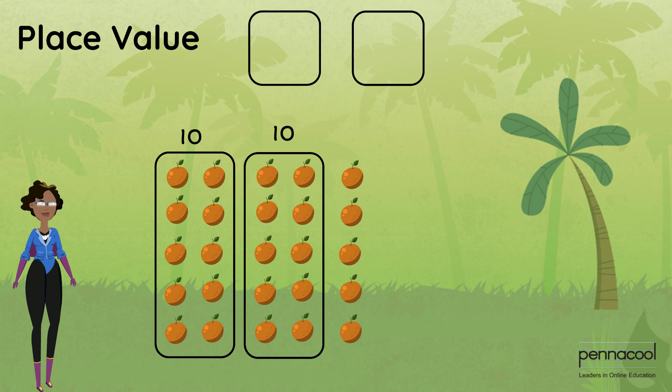Counting our ones: one, two, three, four, five. So in our tens place we have two, and in our ones place we have five, which gives us 25.